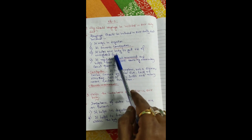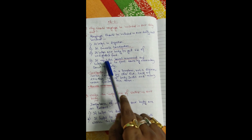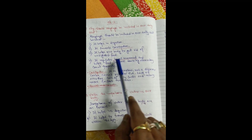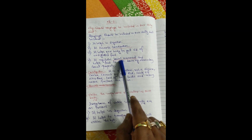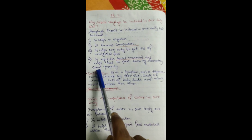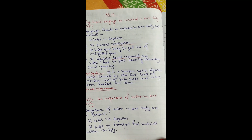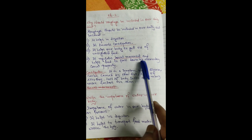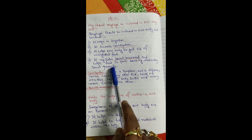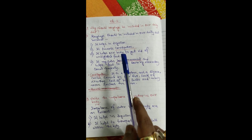Fourth, roughage regulates bowel movement — I have underlined this term as well, and you will learn what bowel movement means shortly. Fifth, it helps food to pass down through the alimentary canal properly. In your body there is an alimentary canal, and roughage helps food pass through it properly while also regulating bowel movement.